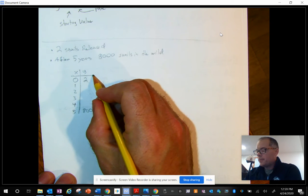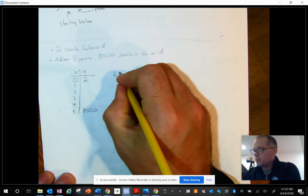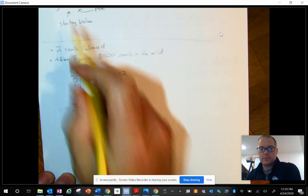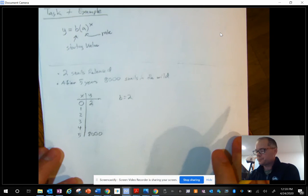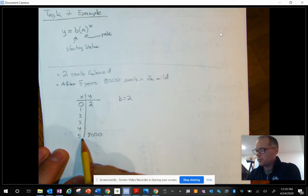Now what we want to know, the initial value is two. So that means B equals two as far as this original equation is concerned. And at some point, when my X is five, this is 8,000.